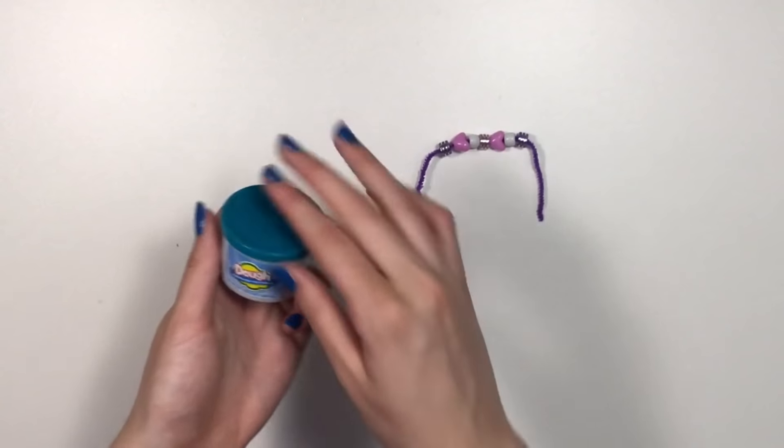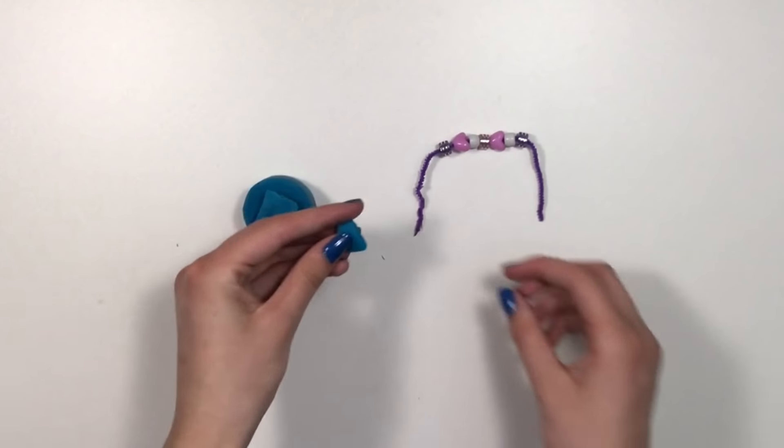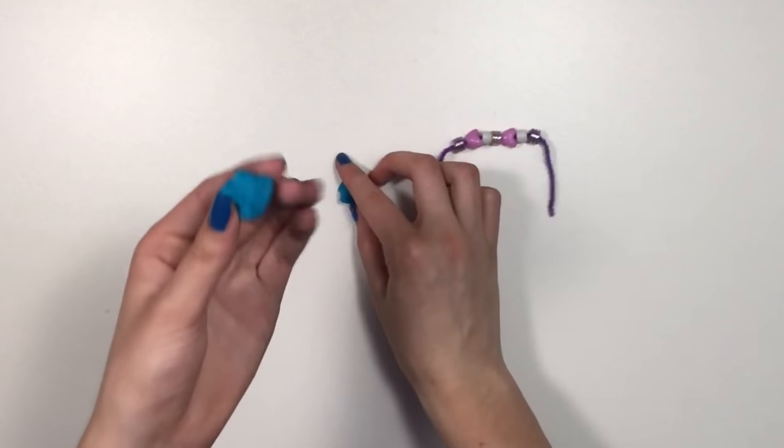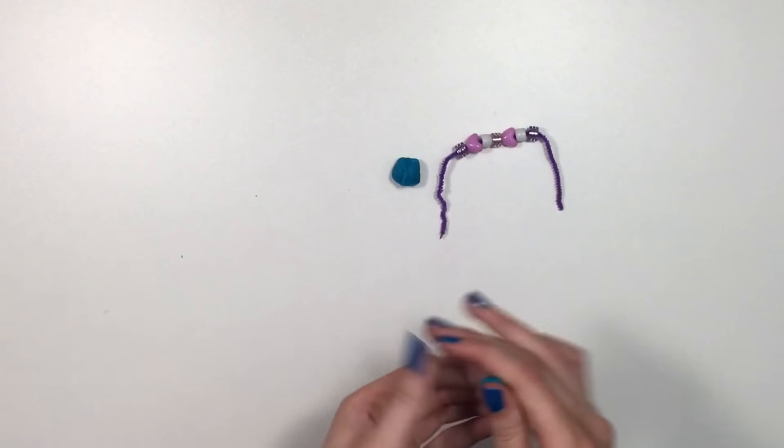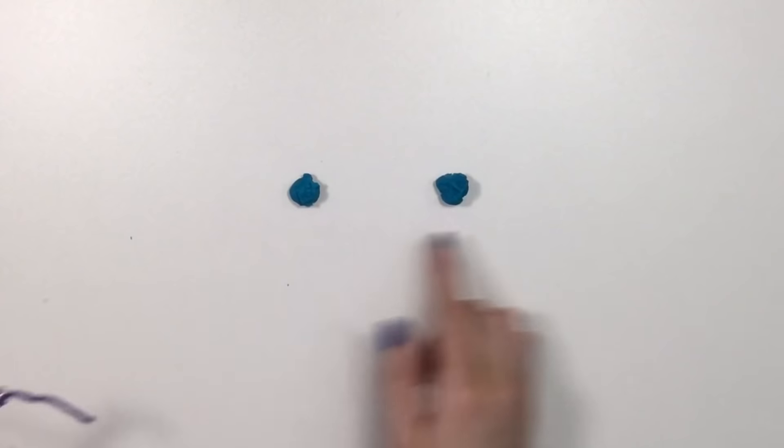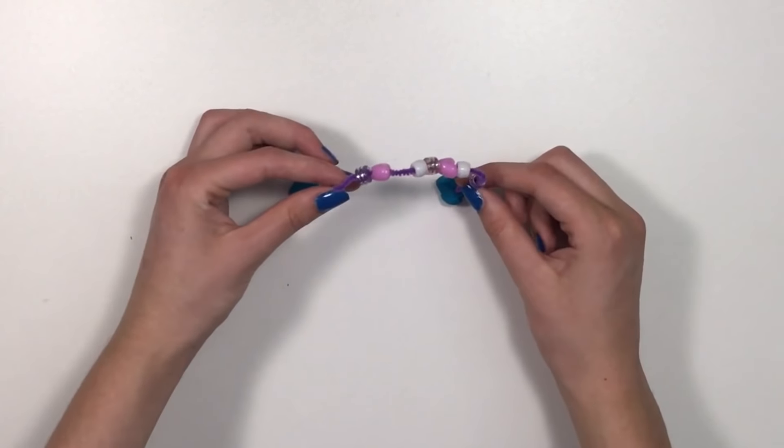Then grab some play-doh or clay and grab a small piece of it. We'll take two pieces and roll them into balls. Place them side by side like this, put some space in between, and then stick your arch into them.